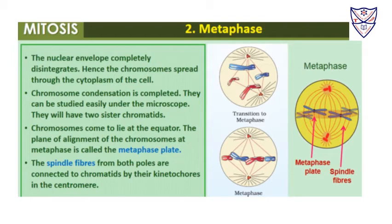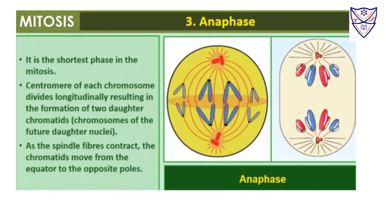Anaphase is the shortest phase of mitosis. The centromere of each chromosome divides longitudinally, forming two daughter chromatids. As the spindle fibers contract, the chromatids move from the equator toward the poles. They were present at the equator at the start but are now present at the two ends.